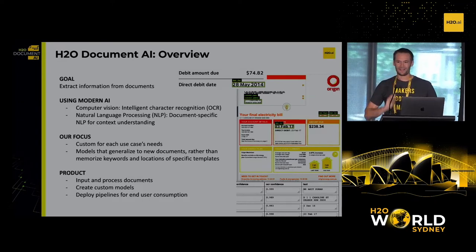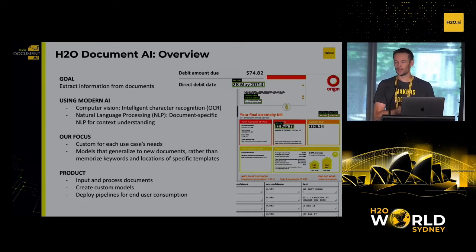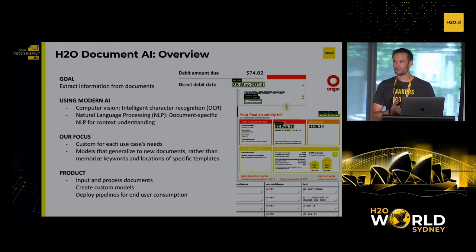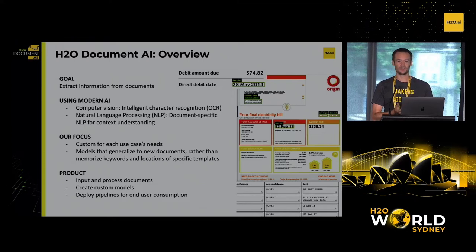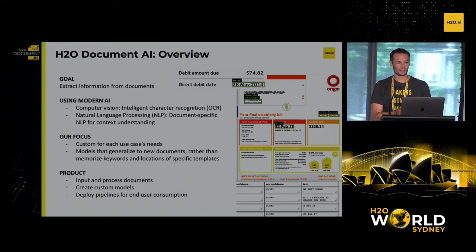So what is Document AI? Our goal with this product — it's a new space with a lot of different companies doing it — is extracting information from documents. Really simple, kind of boring. What it really is, is going after key information that businesses need. A lot of these processes are done manually: we've got a stack of documents, scanning those, having someone key them in. Sounds old-fashioned, but there are a lot of those use cases out there.